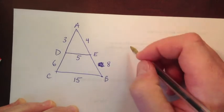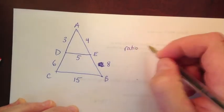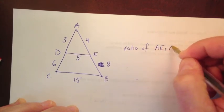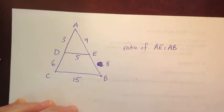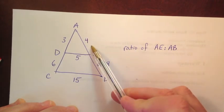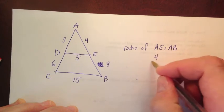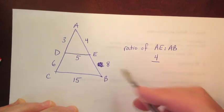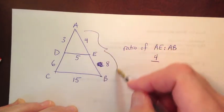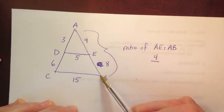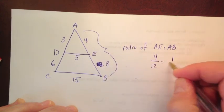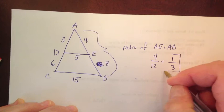If I say, what's the ratio of AE to AB? Well, we could say the length of AE is 4. I'm going to write it as a fraction. And the length of AB. Now, AB is the whole thing here. To get the whole segment, we have to add the two parts. So 4 plus 8 is 12. And we always reduce so your answer is 1 third. That's the ratio of AE to AB.